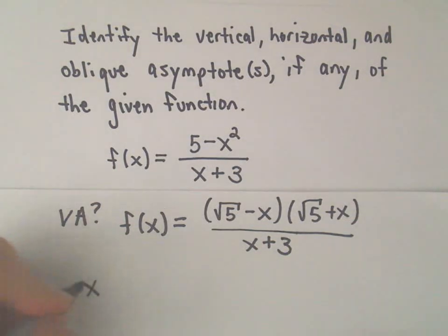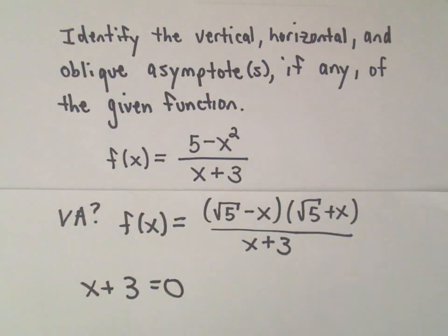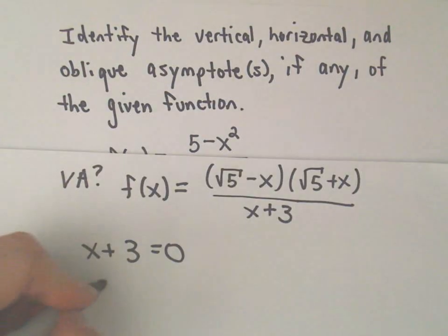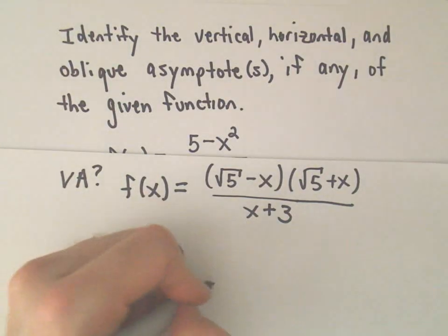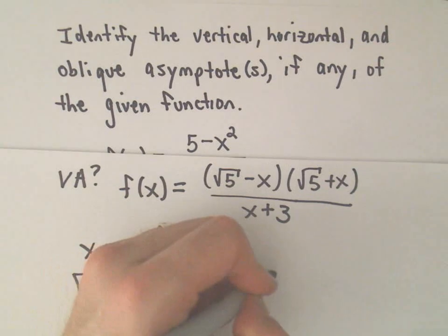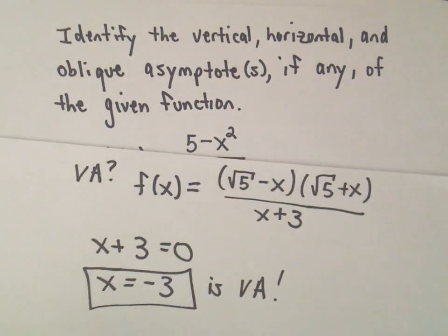So, since there's no common factors, we simply take the denominator, set that equal to 0, and then solve. All we have to do is subtract 3 from both sides, and that'll tell us that x equals negative 3 is the vertical asymptote, and in this case, the only one.